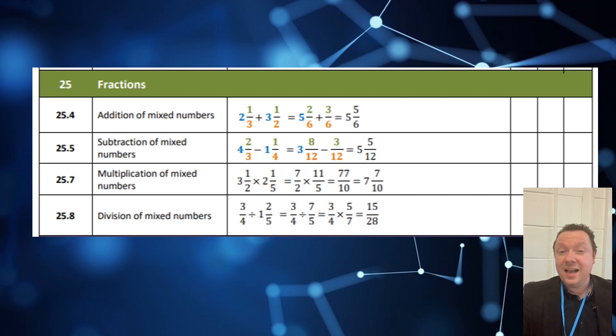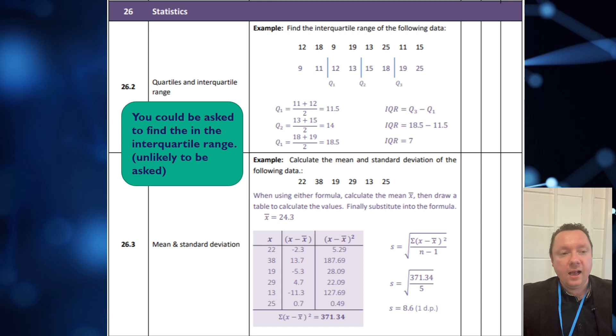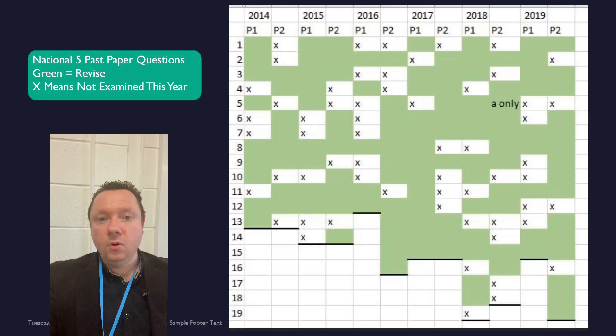And with stats, again, the SQA said that comparing data using interquartile range is out, but you could still be asked in theory to find the interquartile range. So I've left that in. And obviously mean and standard deviation is there as well.